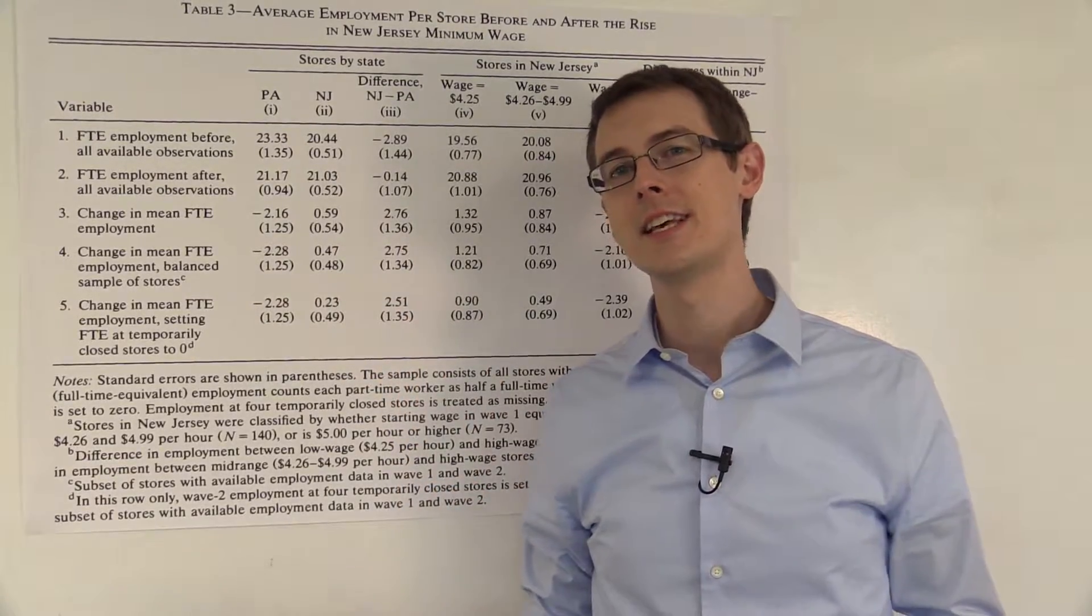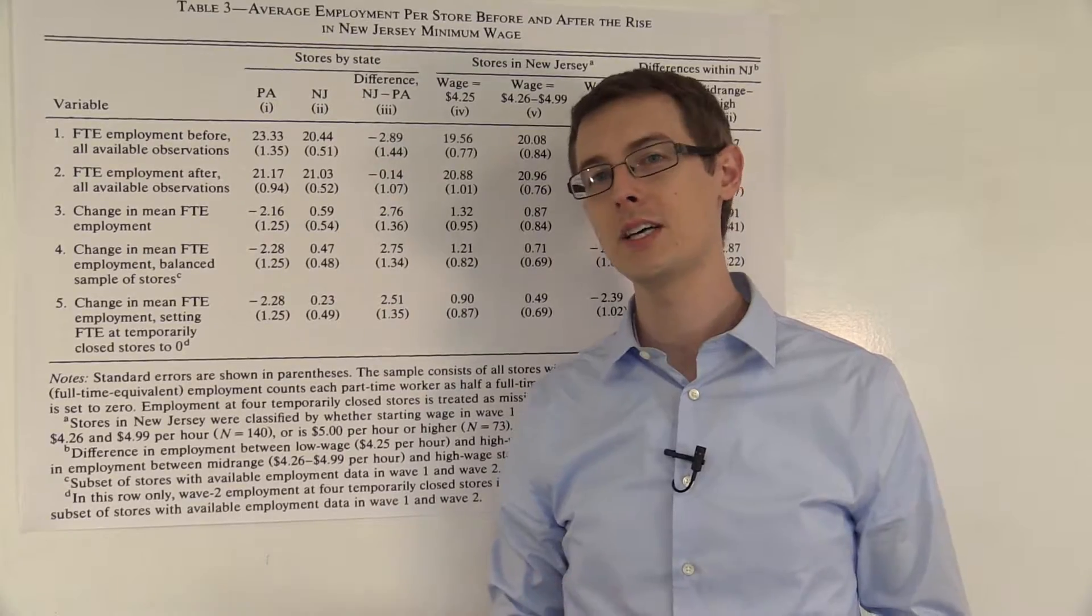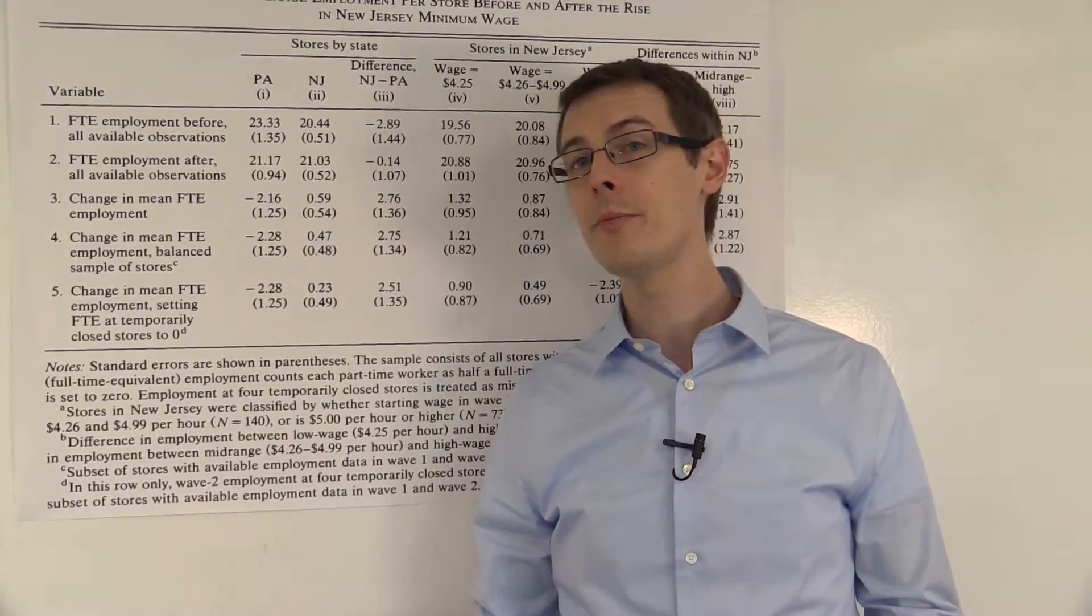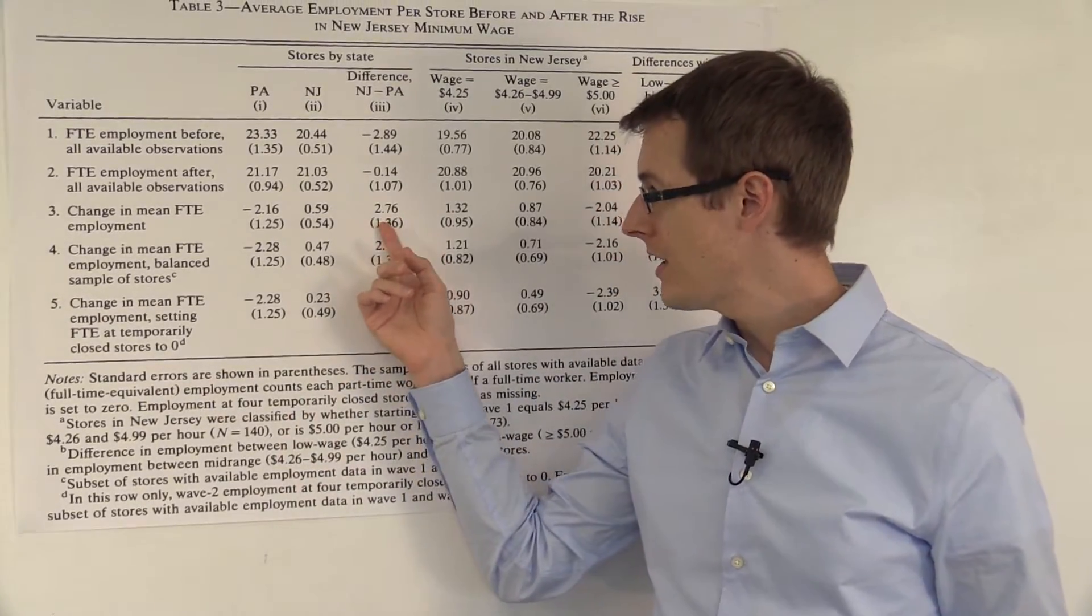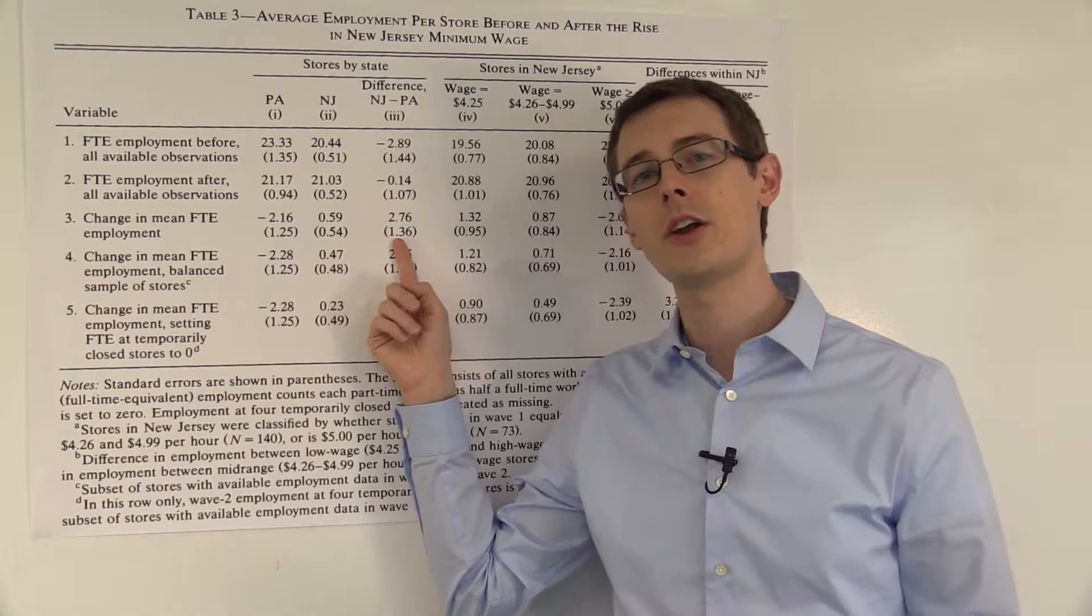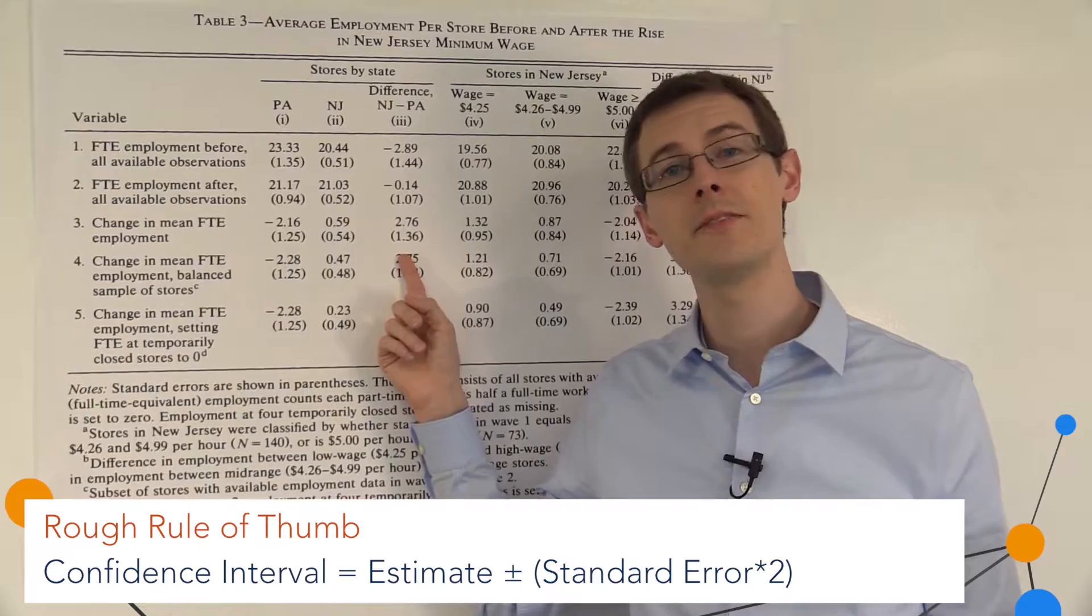So that suggests that the minimum wage actually increased employment in fast food restaurants by almost three people, which is quite a big effect. And if you look at the standard deviation here shown in parentheses, and you use this and our rule of thumb to get a confidence interval, you'd find that this effect also is actually statistically significant.